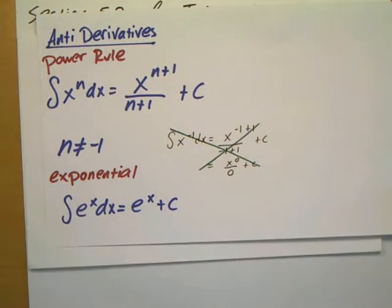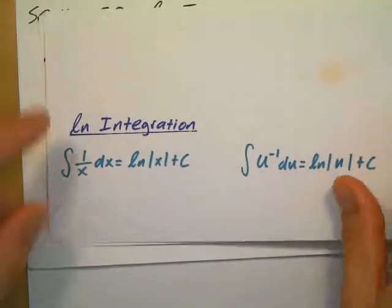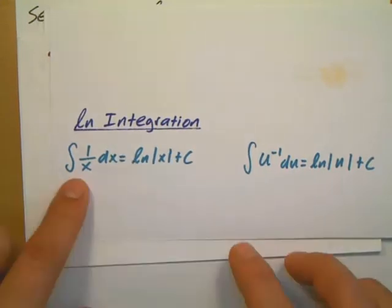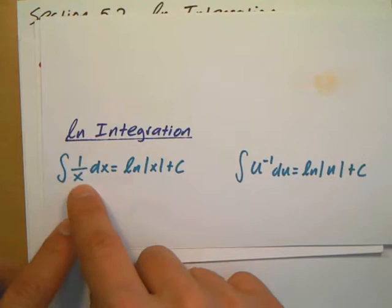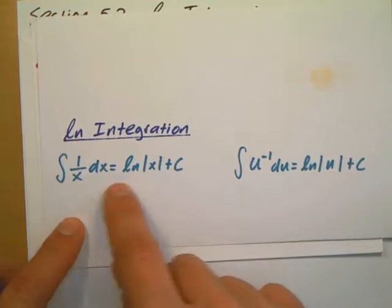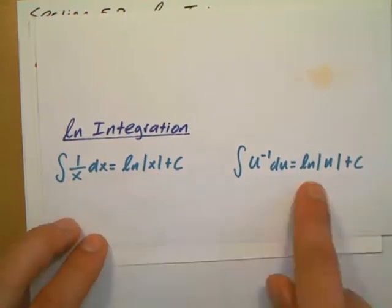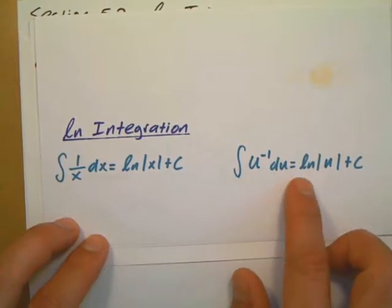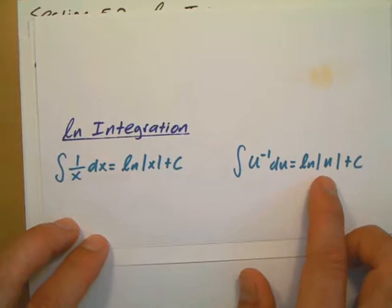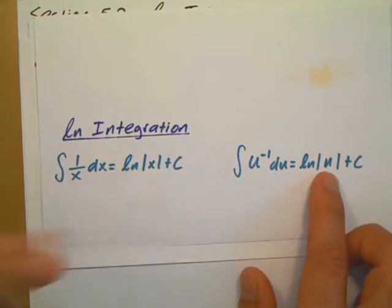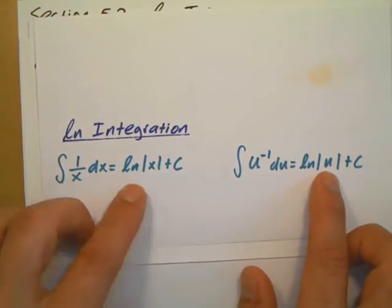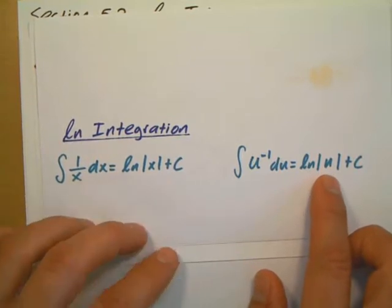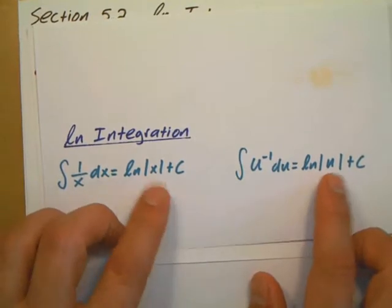This is where this section comes in, because now we have these two new rules. This rule says that if you have your integral as 1 over x, the anti-derivative is going to be ln absolute value of x. More generally, if you have u to the negative 1 and you're doing a u sub, the integral is going to be ln absolute value of u. The reason they're absolute values is you can't have a negative argument in a logarithm, so this ensures it stays positive, which means the integral is going to be defined.